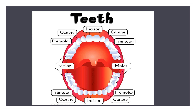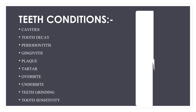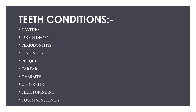That covers the structure and types of teeth. Now let us look at certain conditions that are harmful for our teeth. The conditions we will study today are: cavities, tooth decay, periodontitis, gingivitis, plaque, tartar, overbite, underbite, teeth grinding, and tooth sensitivity. These are the different types of dental problems we face, and we will go through each one.